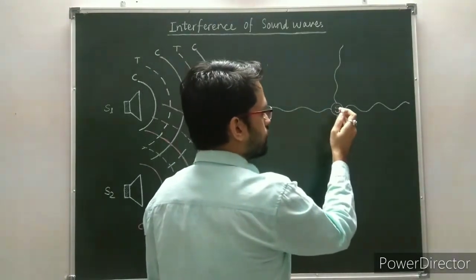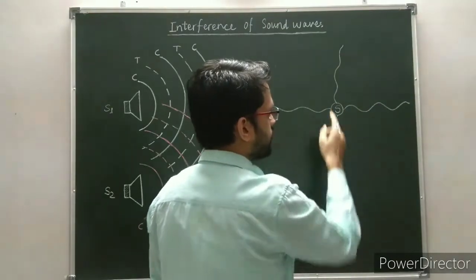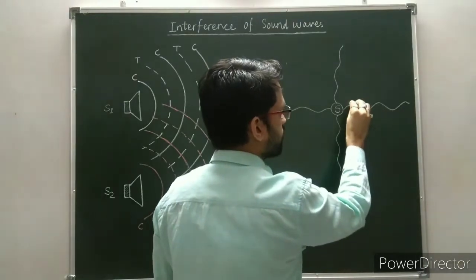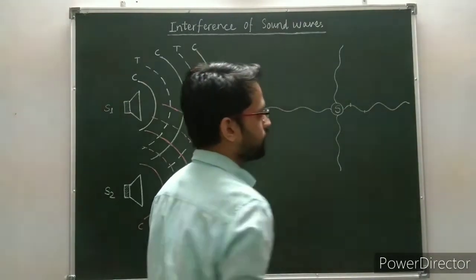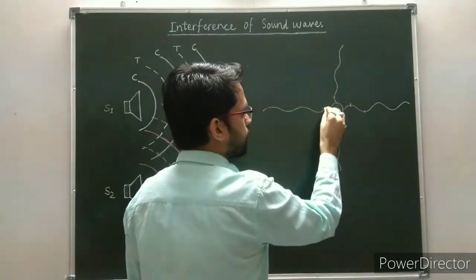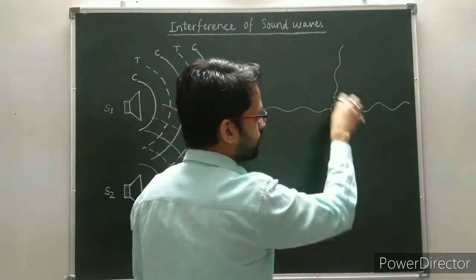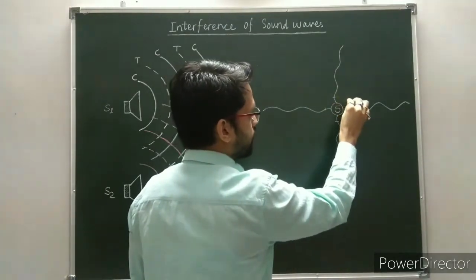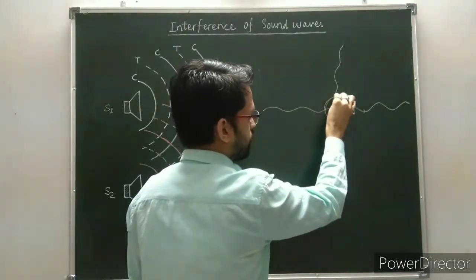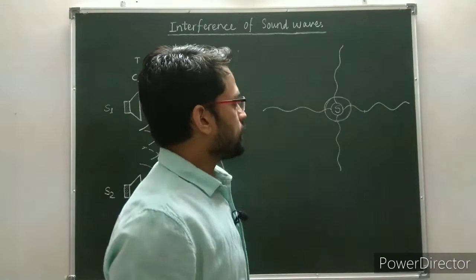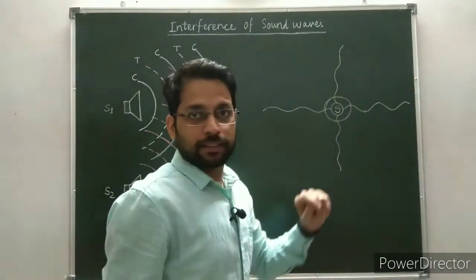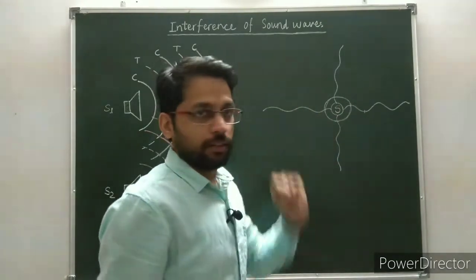The sound propagates in the form of crests and troughs. This is the crest and this is the trough. When you join all the crests, you will get a surface, and this surface connecting all the crests is known as a wavefront.